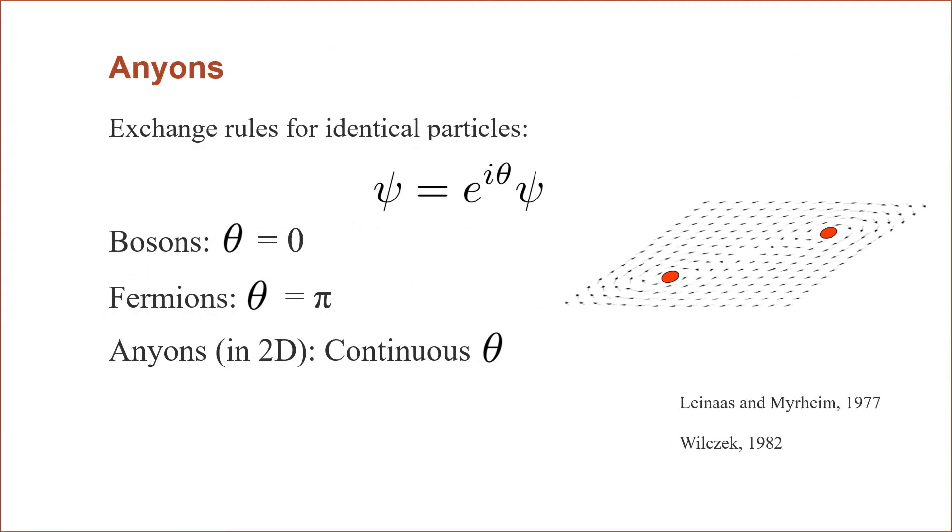It has long been known that bosons and fermions have particular exchange statistics for identical particles. For example, bosons do not pick up a phase factor when exchanged, and fermions pick up a phase factor of negative one due to the Pauli exclusion principle. However, in 1977, Leinaas and Myrheim proposed that there was a continuum in two dimensions where a new type of particle could pick up a phase that really had no constraint, and for that reason it was called an anyon by Frank Wilczek in 1982.